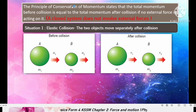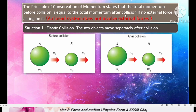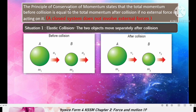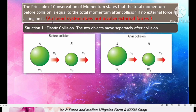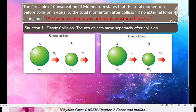The principle of conservation of momentum states that total momentum before collision equals total momentum after collision if no external force is acting on it. A closed system means the system does not involve external forces. Only when there are no external forces can we apply this principle of conservation of momentum.